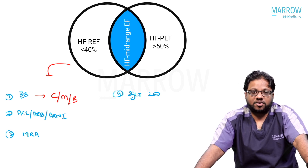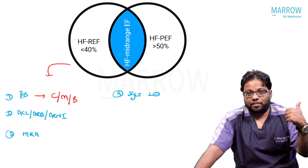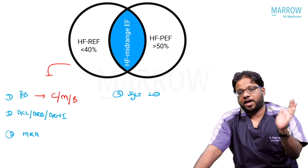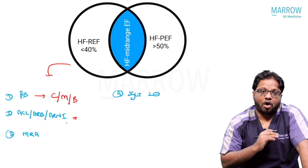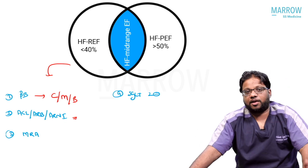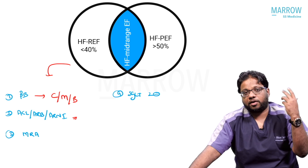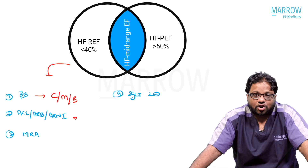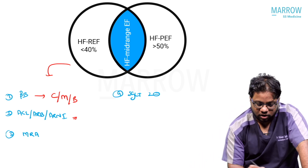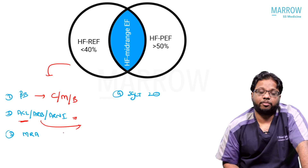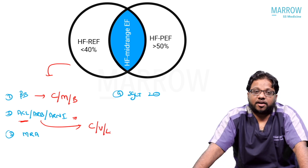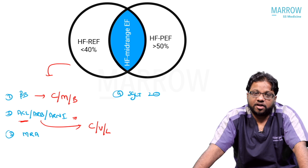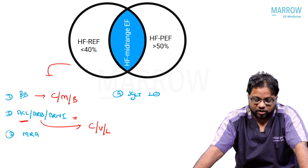All ACE inhibitors are pretty much approved: enalapril, perindopril, ramipril, trandolapril, quinapril. For ARBs, only three are approved: candesartan, valsartan, and losartan. Telmisartan and olmesartan are excellent agents for hypertension but are not recommended in HFrEF. So only three ARBs — candesartan, valsartan, and losartan — are approved.